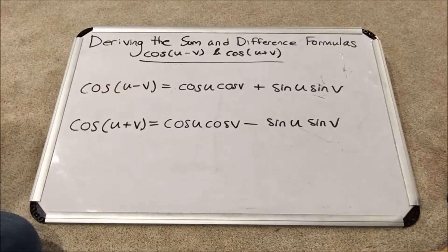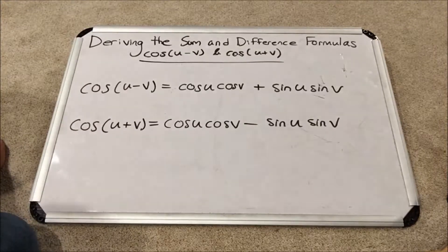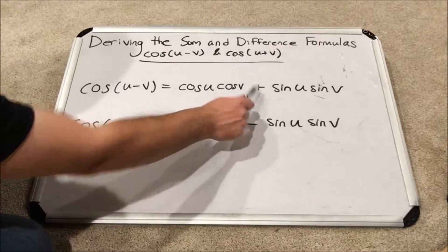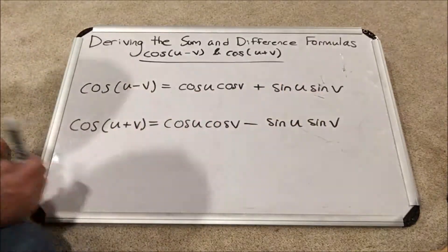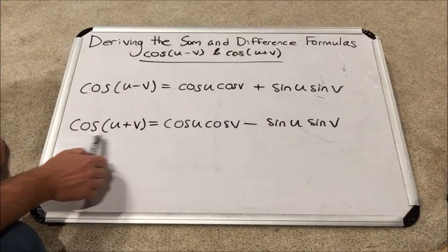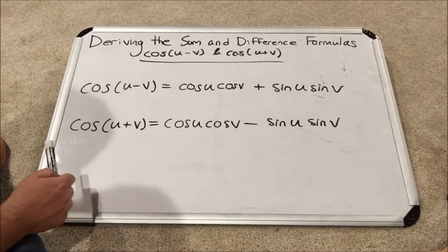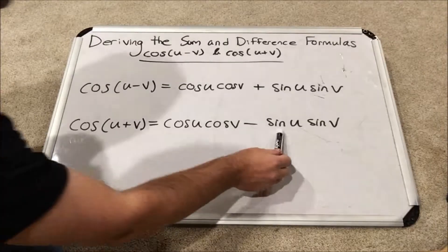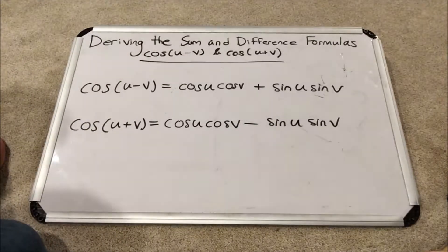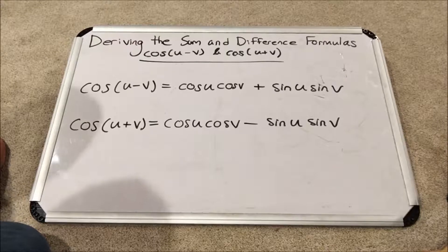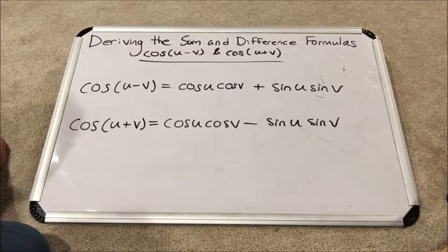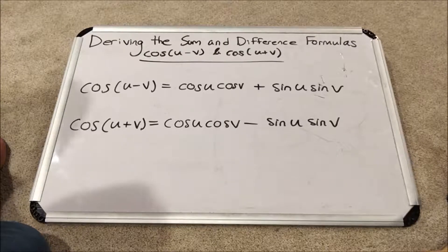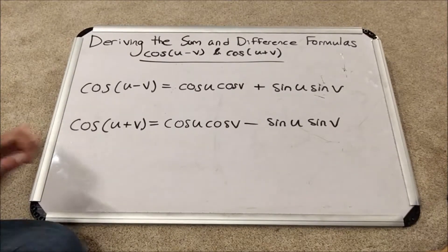Cosine of u minus v. So these u's and v's represent two different angles. This equals the cosine of u times the cosine of v plus the sine of u times the sine of v. And then the cosine of the sum of two different angles u and v is equal to the cosine of u times the cosine of v minus the sine of u times the sine of v. Now this derivation is quite laborious so hang on to your hats. We're in for a long ride but the outcome is quite nice.